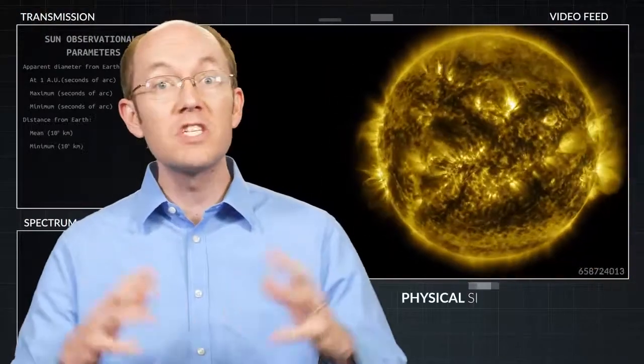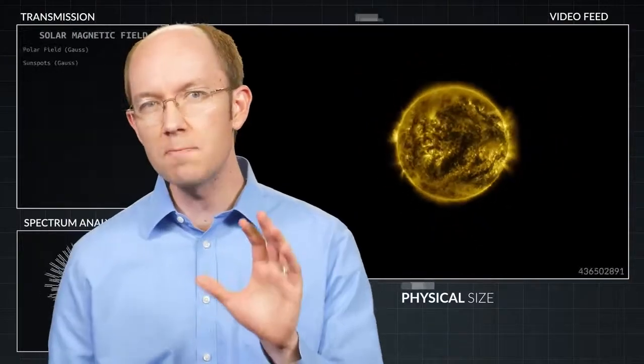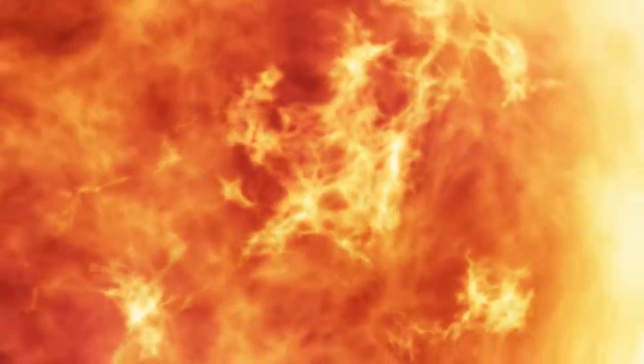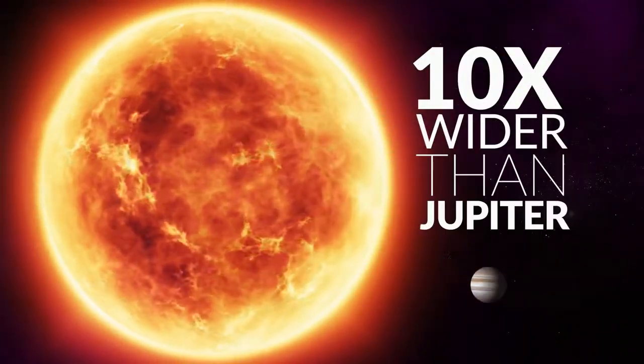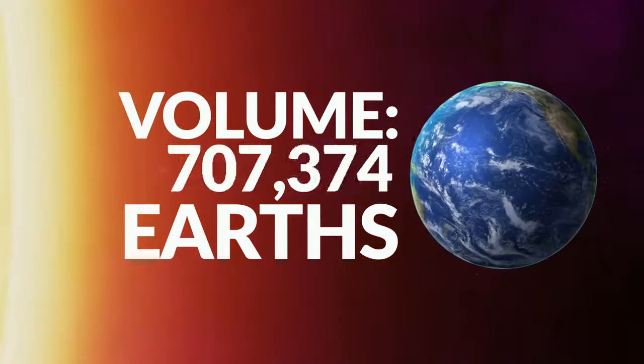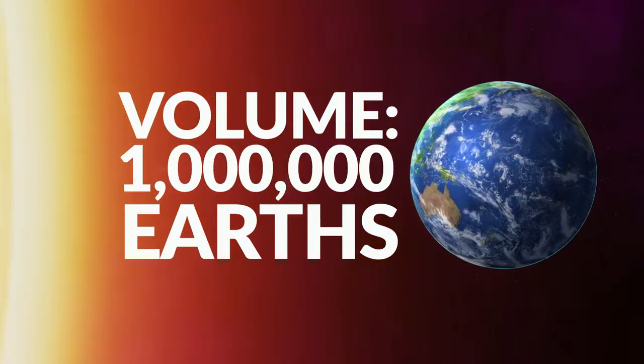First, in terms of its physical size, the Sun is by far the largest object in the solar system. The Sun is approximately 10 times wider than Jupiter and over 100 times wider than Earth. Its volume could contain around 1 million Earths.